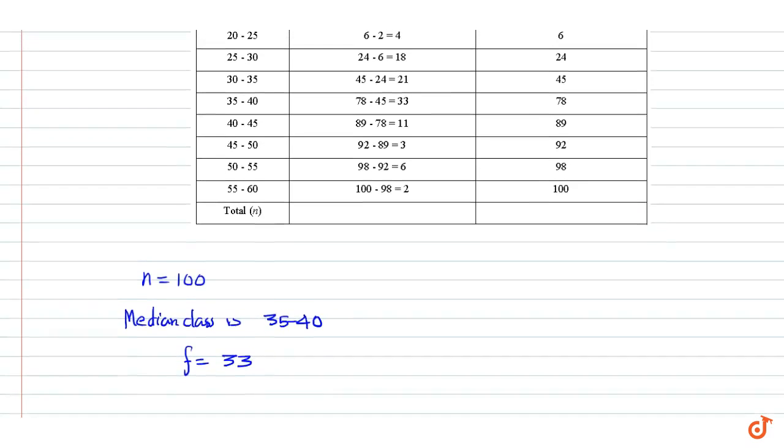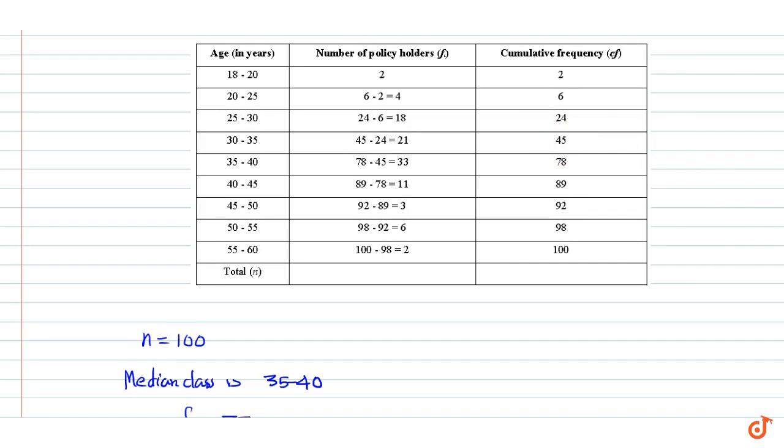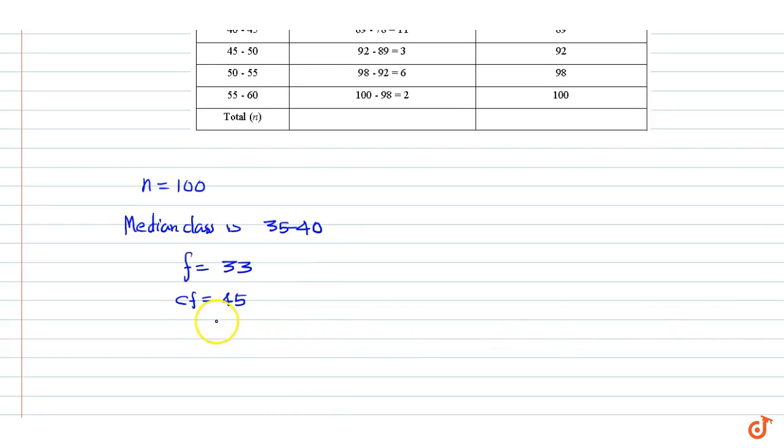The cumulative frequency preceding the median class, cf, equals 45. The class size h equals 5, and the lower limit of the median class l equals 35.